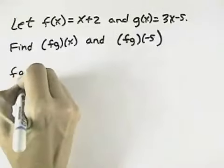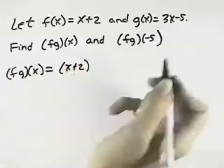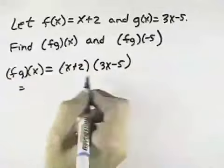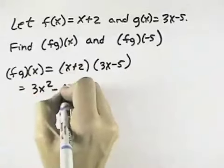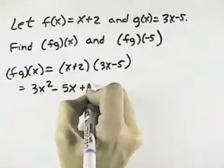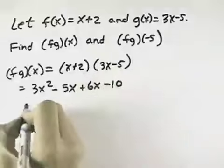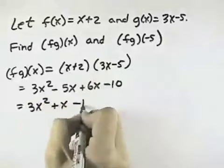So f times g of x means take your function f and multiply it by your function g. When we do that, x times 3x is 3x squared, x times negative 5 for the outer is negative 5x, 2 times 3x is plus 6x for the inner term, 2 times negative 5 is minus 10. So this gives us 3x squared plus x minus 10.